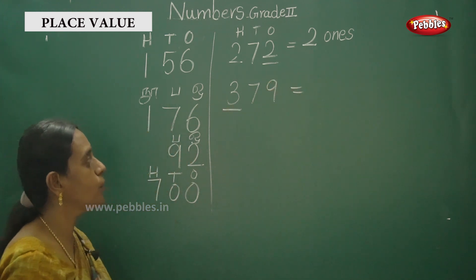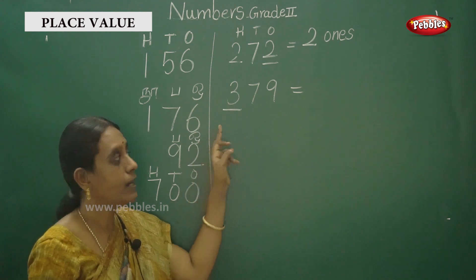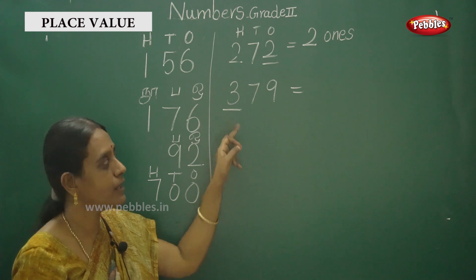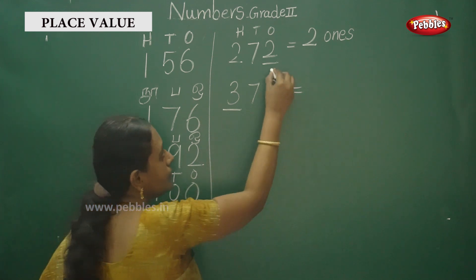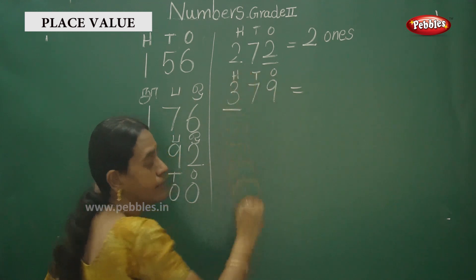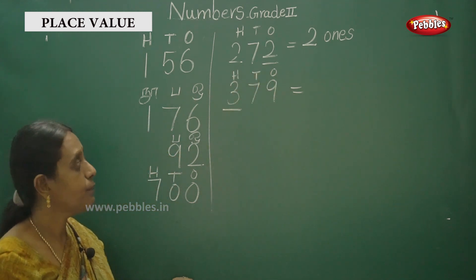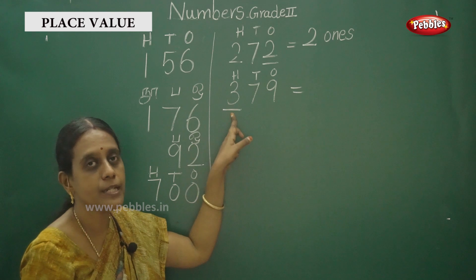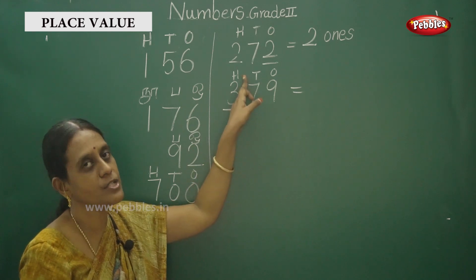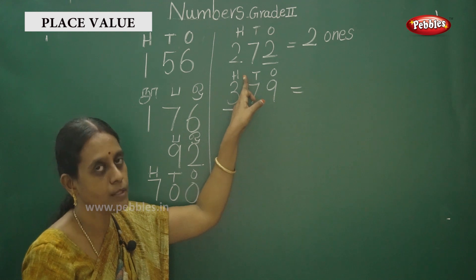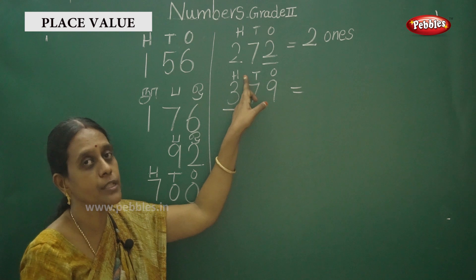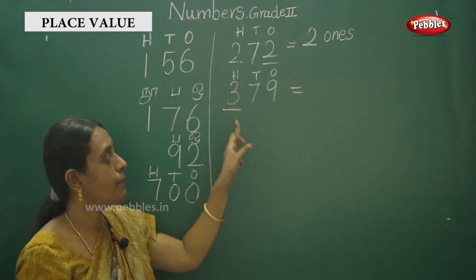Find the place value — find out the place value of the underlined digit. You can write the number. Okay — hundred. 100.